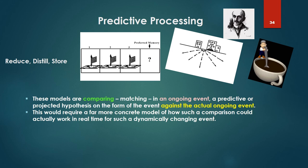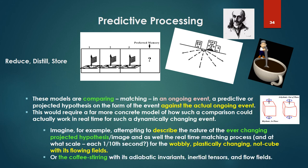Again, these models, the predictive models, are comparing or matching in an ongoing event, a predictive or projected hypothesis on the form of the event against the actual ongoing event. This would require a far more concrete model of how such a comparison could actually work in real time for such a dynamically changing event. Imagine, for example, attempting to describe the nature of the ever-changing projected hypothesis or image, as well as the real-time matching process, and at what scale, what time scale? Each one-tenth of a second for the wobbly, plastically changing knot cube with its flowing fields, or for the rigid, non-rigid ellipse, or the coffee stirring with its adiabotic invariance, inertial tensors and flows. I personally cannot begin to imagine how one would describe this process.